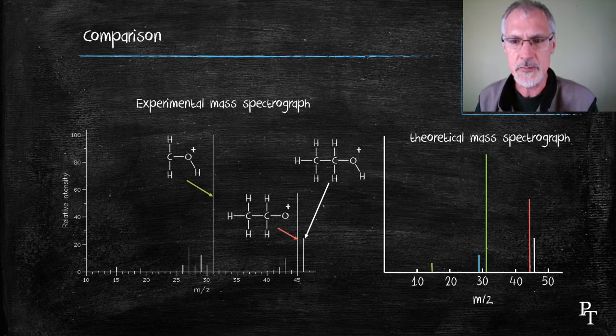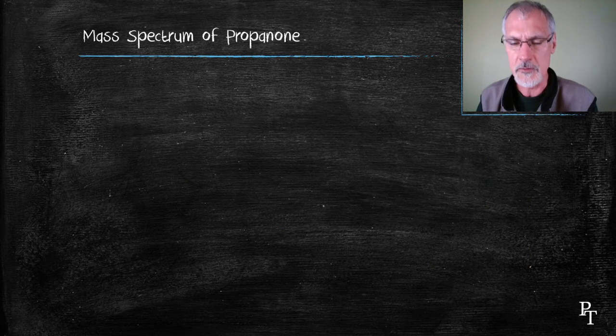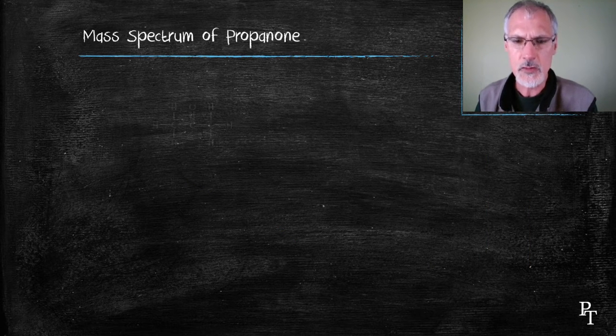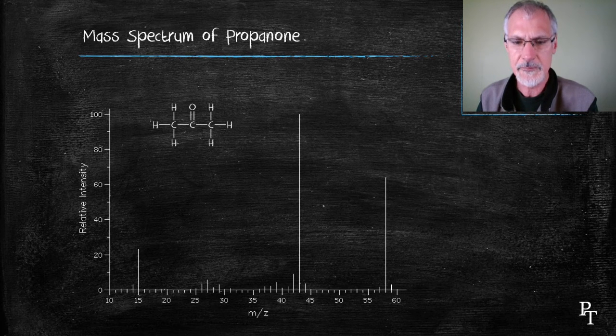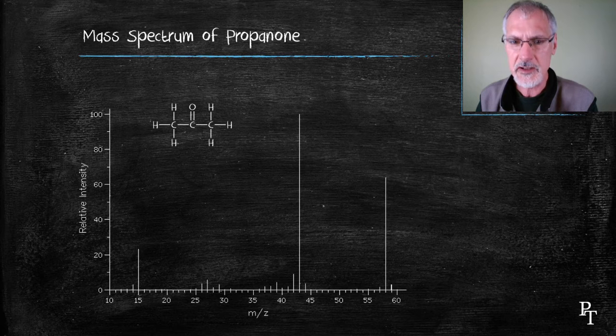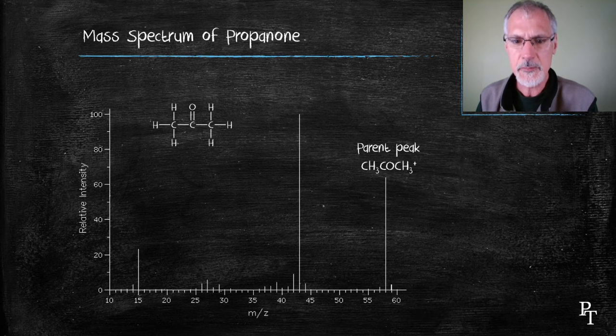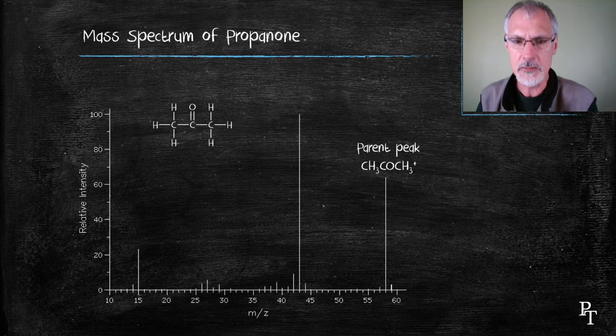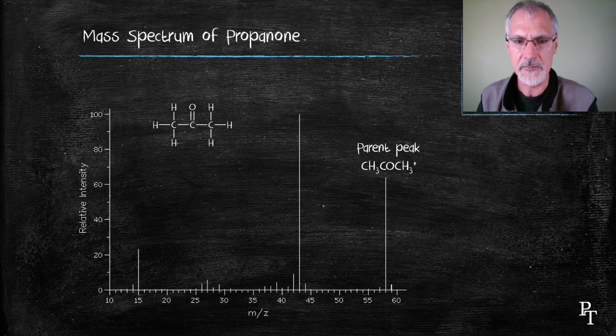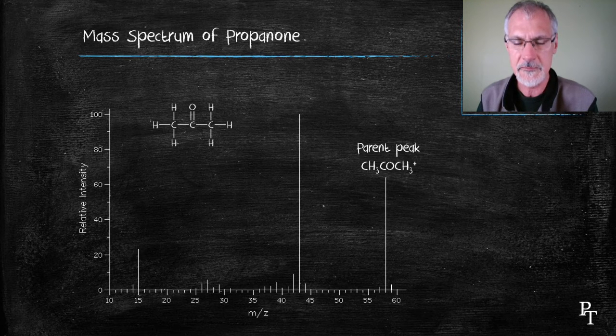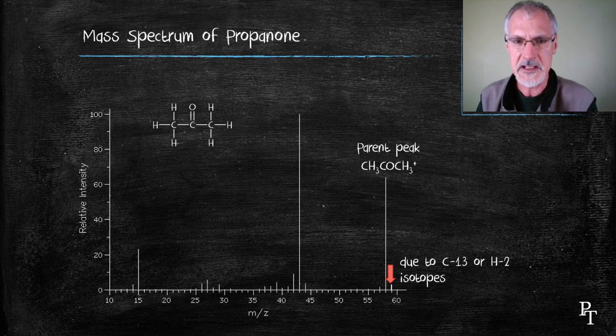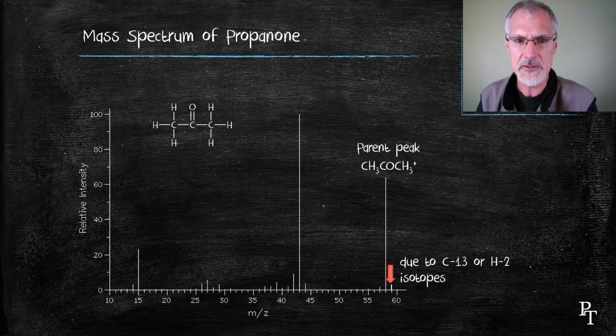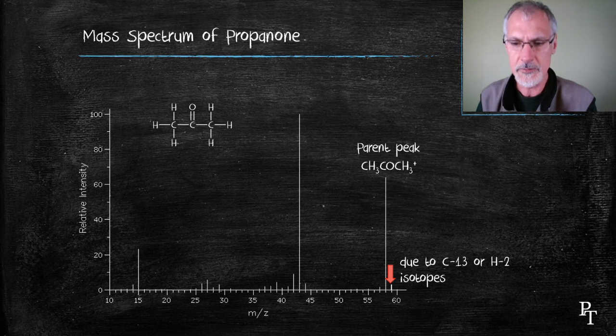Let's look at the mass spectrum of the chemical propanone. Propanone is a member of the ketone family with a double bonded oxygen in the center. The peak I see on the far right-hand side at 58 is the parent peak. It's the whole molecule passing through developing a positive charge with nothing breaking off. I'd like to just point out the small peak you see appearing at 59. It perhaps could be due to the occasional atom of carbon or hydrogen, which is of the heavier isotope.